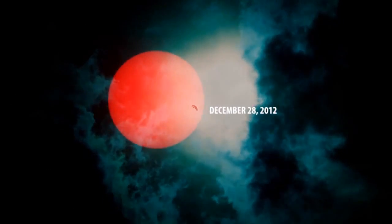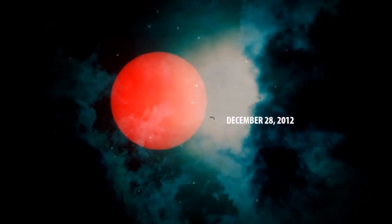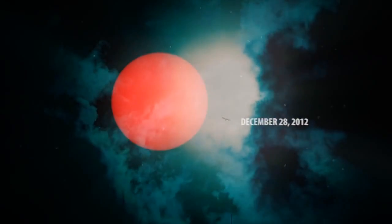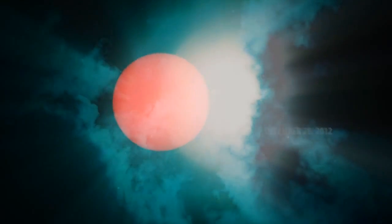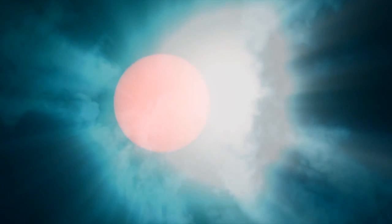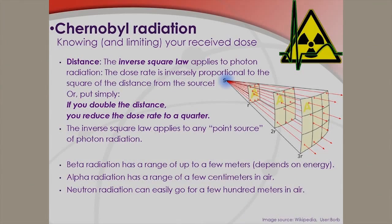It includes real-life examples, such as why holding a fragment of Chernobyl's nuclear fuel in your bare hand is not as crazy as you might think. The inverse square law applies, which says that the dose rate is inversely proportional to the square of the distance — or in simple terms, if you double the distance, you reduce the dose to just a quarter.